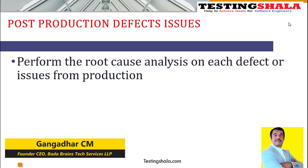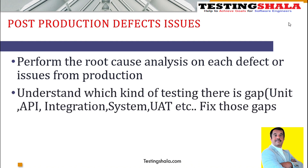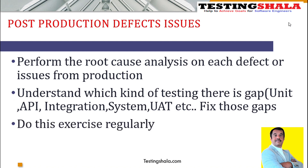What we should do is keep performing root cause analysis on every production issue, identifying through which gap the issue came — whether it's a lack of unit test cases, integration test cases, regression gaps, functional gaps, or even missing performance test cases. What is the reason behind why these production issues are coming from the client? Once we have that information about where the gap is, we should put a plan to fix those gaps.